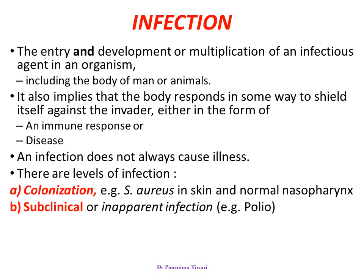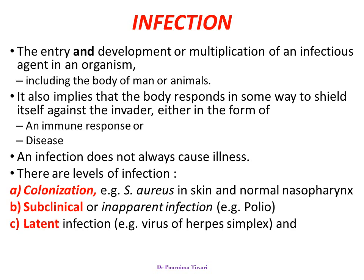The second level is subclinical infection or inapparent infection — infection occurs but little disease results. It happens very commonly in polio. Next is latent infection; for example, herpes simplex, where the infectious agent remains latent in the body and develops into disease whenever the body defenses are low. And finally, the last stage is manifest or clinical infection, when the actual disease occurs due to the infectious agent.